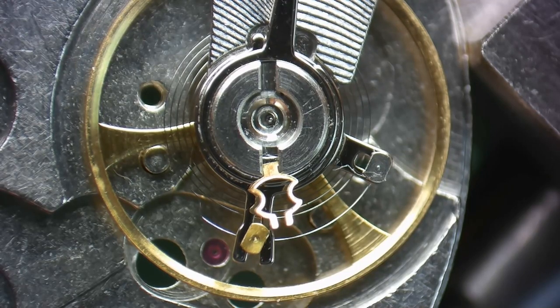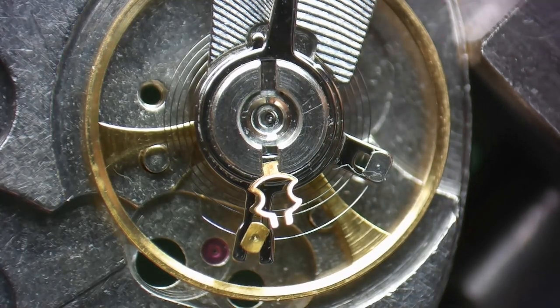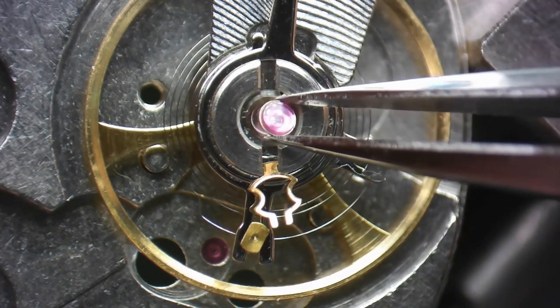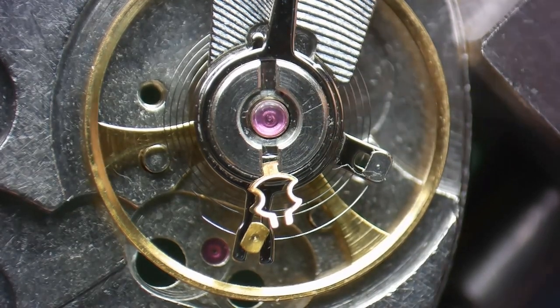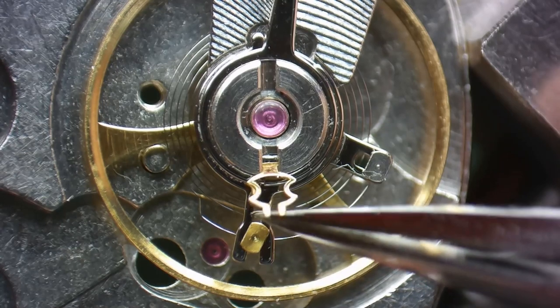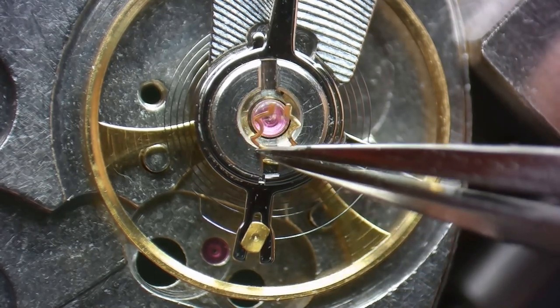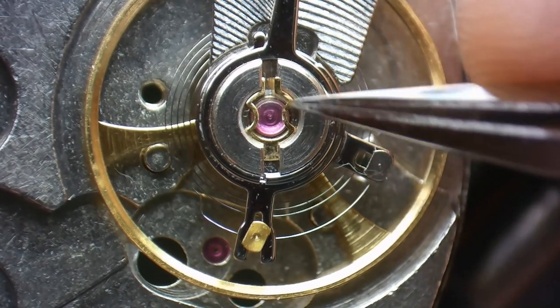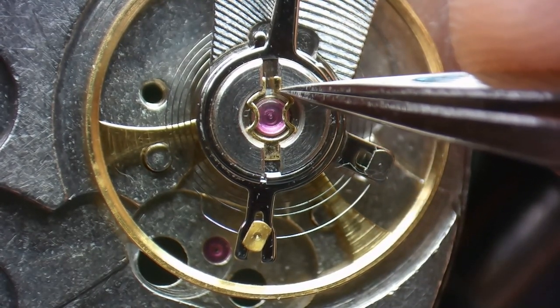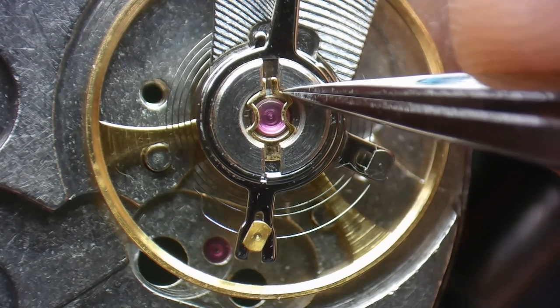Now to reinstall the chaton and end stone back into the jewel setting, simply drop it in. Push over the retaining clip, push one side of the clip in, and then push the other side of the clip in.